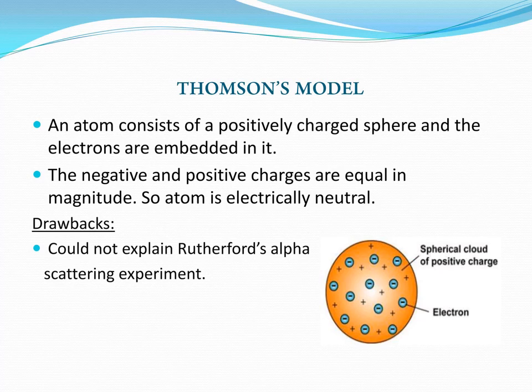This is Thomson's model — the atom is a sphere with electrons embedded in it. This model has a drawback, which was explained by Rutherford's Alpha Scattering Experiment.